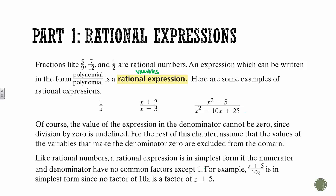Of course, the value of the expression in the denominator cannot be 0, since we can't divide by 0. So for the rest of this chapter, we're just going to assume that x can't be 0 if it makes the denominator 0, or whatever number does make it 0.